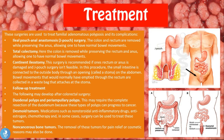A continent ileostomy is recommended if the rectum or anus is damaged or J-pouch surgery isn't feasible. In this procedure, the small intestine is connected to the outside of the body through a stoma in the abdomen. Bowel movements are then collected in a waste bag that attaches to the stoma.